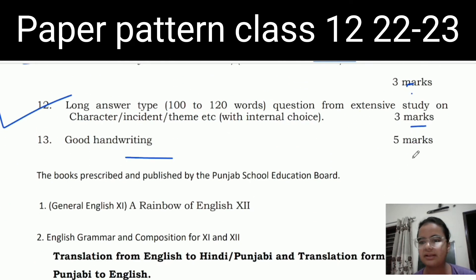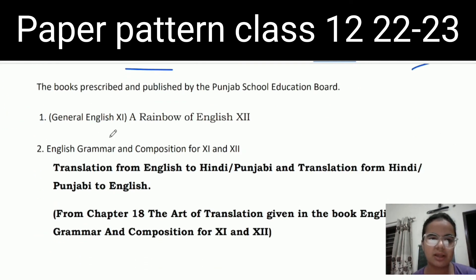Good handwriting has 5 marks, so make sure that handwriting is very good. The book used is Rainbow of English, and English Grammar and Composition for 11th and 12th. Translation from English to Hindi and translation from Hindi and Punjabi to English is from chapter 18, The Art of Translation, given in the English grammar and composition book for class 11th and 12th.